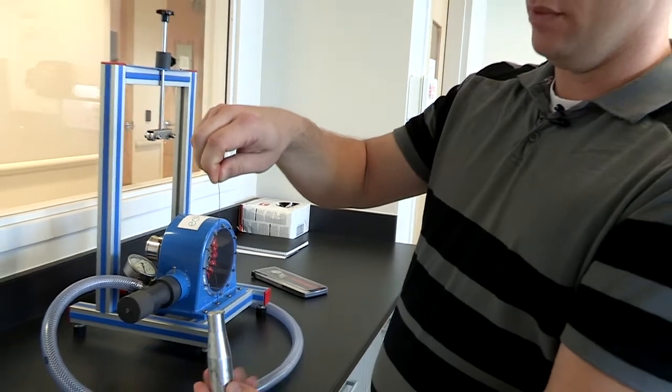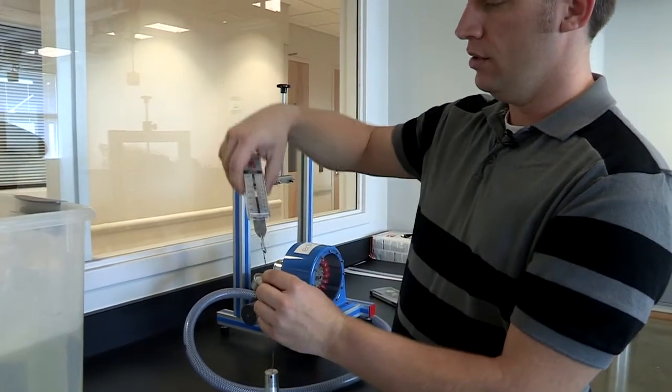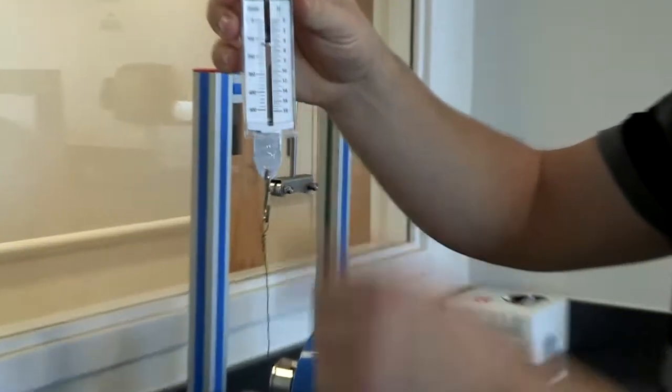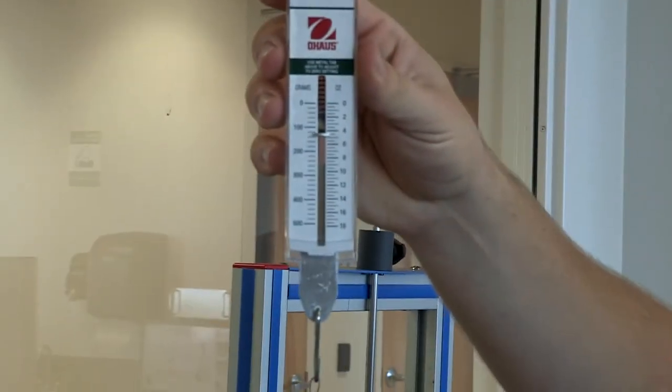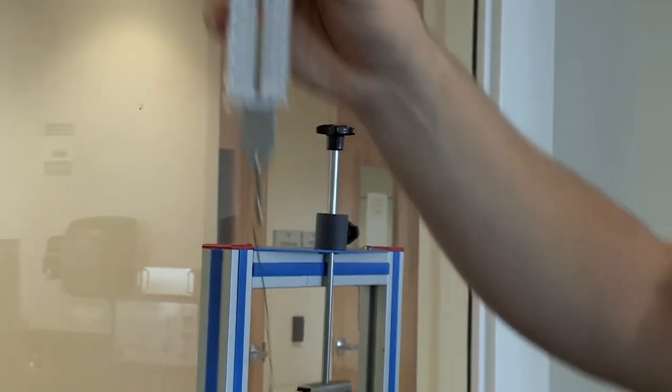Next, you'll put it on the scale, you'll record the measurements. As you can see, this is standing outside of the water, so this will be the natural weight.